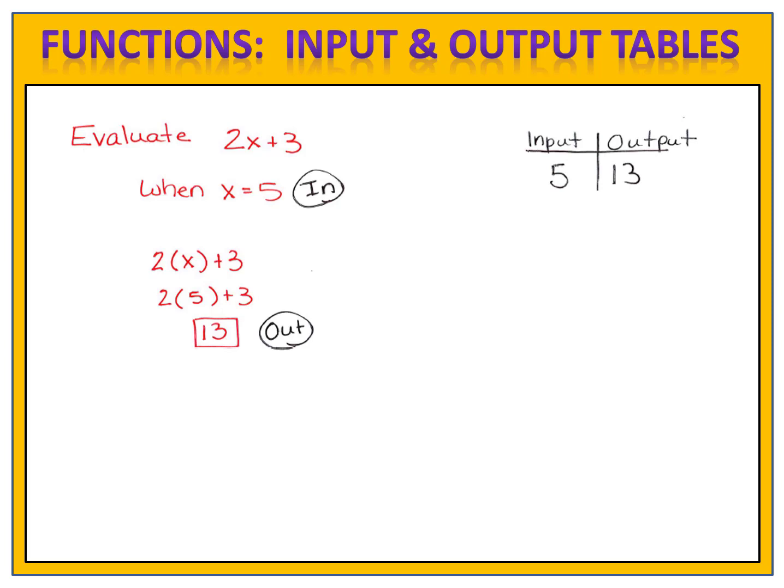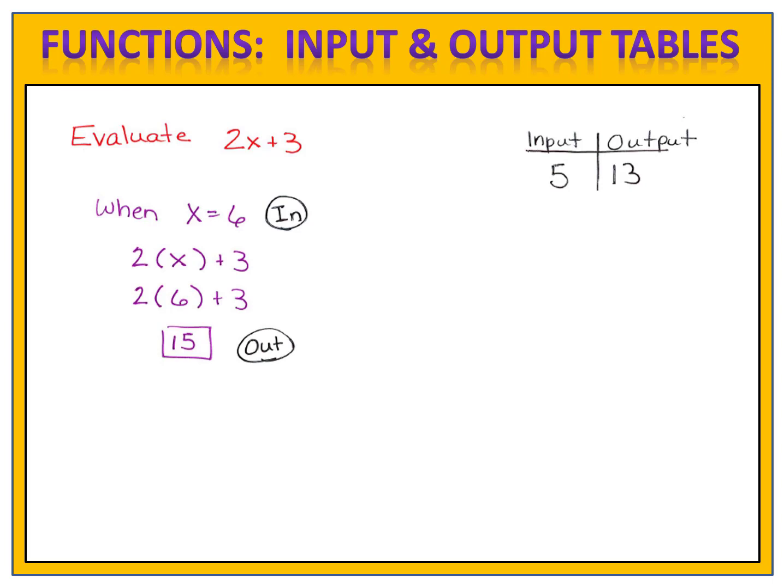Let's look at another example with the same expression. Let's keep 2x plus 3, but this time, let's evaluate 2x plus 3 when x is 6. Once again, we write the expression with our x in parentheses, and then we substitute in place of the x the number 6. Again, we type that into our calculator, and we get the result of 15. When I put in a 6, I got out a 15. The input is 6, the output is 15. And we can record that in our table.